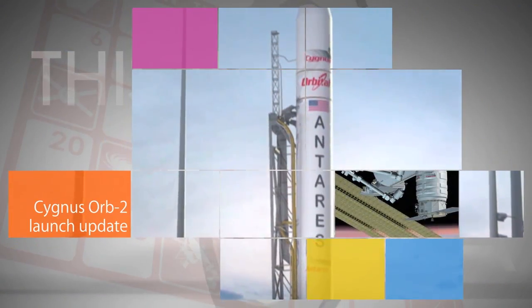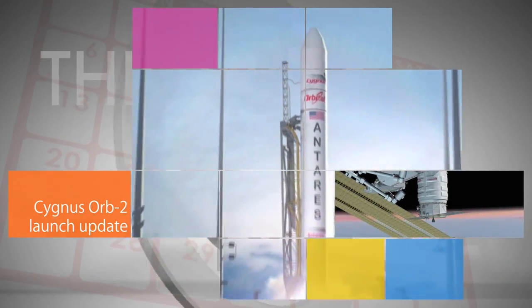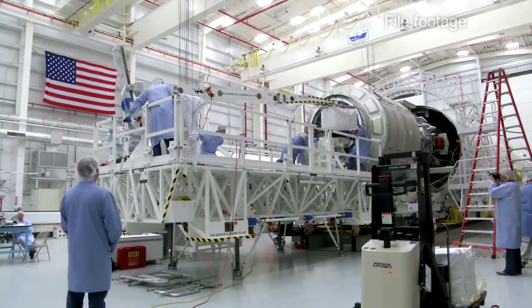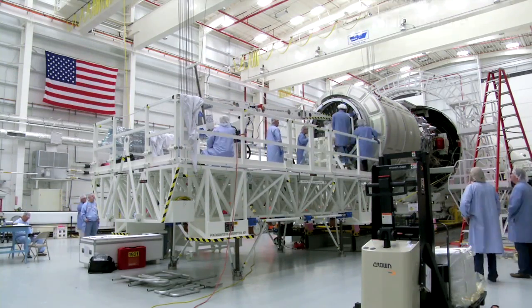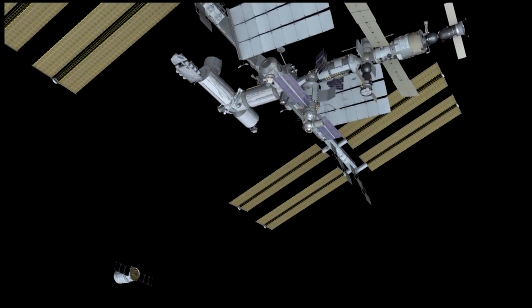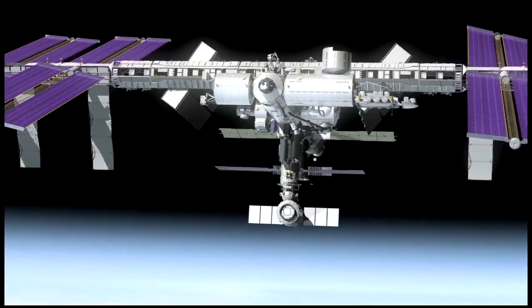Orbital Sciences Corporation has moved the launch date of the Orb-2 mission for its Cygnus cargo spacecraft to the International Space Station to no earlier than July 11. Orb-2 is the company's second of eight cargo resupply missions to the ISS under its Commercial Resupply Services contract with NASA.